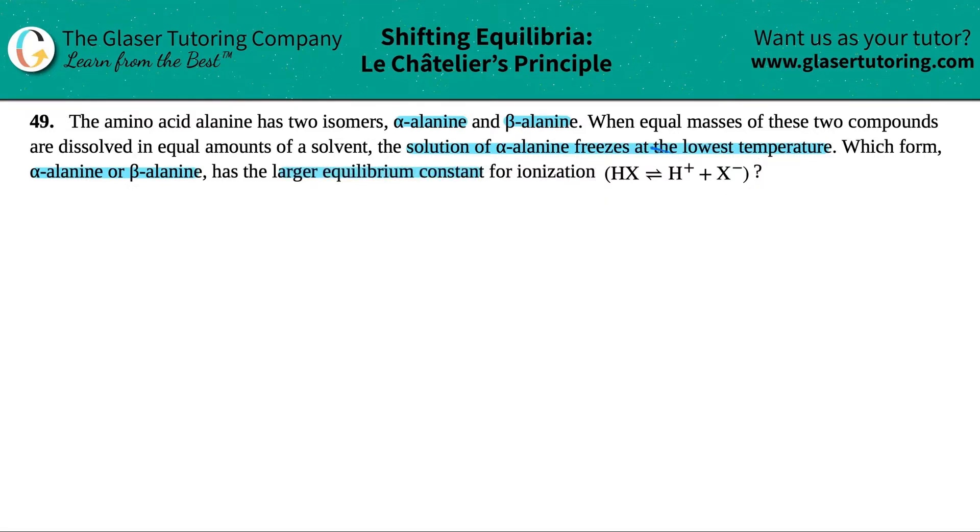They give us a general form of the ionization: HX comes to equilibrium with H+ and X-. This is coming back to a concept from a previous chapter that has to do with freezing point depression.